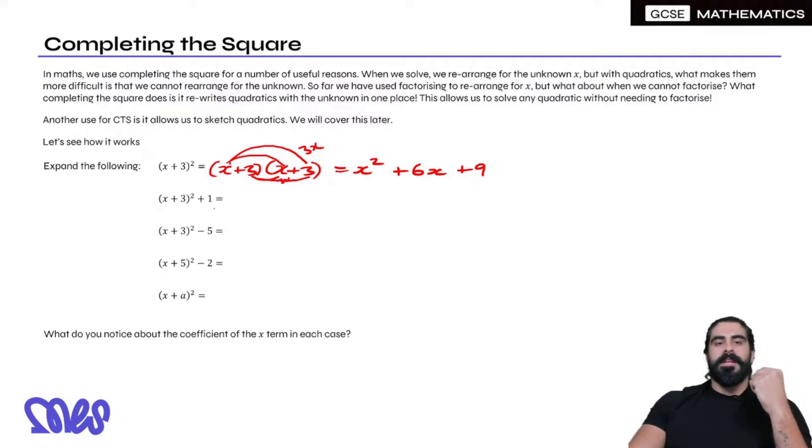Now let's see what happens with the next one: (x + 3)² + 1. We've already done the expansion for this, and then we have that plus 1 at the end. So that simplifies to x² + 6x + 10.